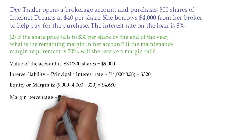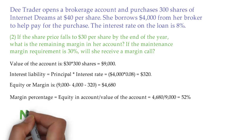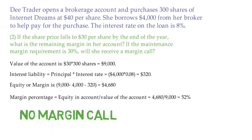The margin percentage in the account is equity divided by total account value: 4,680 divided by 9,000, which gives you 52%. Therefore, the investor will not receive a margin call because 52% is still above the margin requirement of 30%.